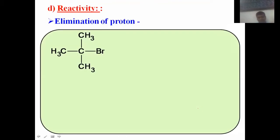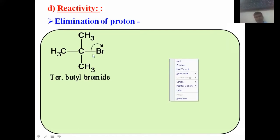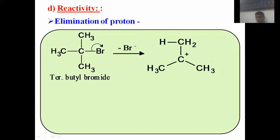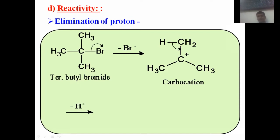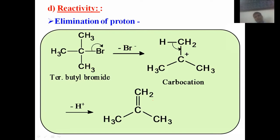The next reactivity example is elimination of a proton. Again, in tertiary butyl bromide, the C–Br bond breaks heterolytically — the electron pair goes toward bromine, which acquires a negative charge, while carbon acquires a positive charge. Then the bond between carbon and an alpha hydrogen atom undergoes breaking; that electron pair goes toward the electron-deficient carbon. There is a loss of H⁺, and we get the corresponding alkene. Carbocations can therefore be converted into alkenes by elimination of a proton.